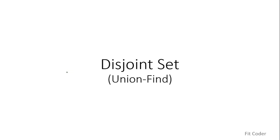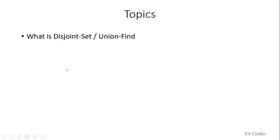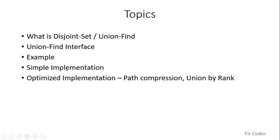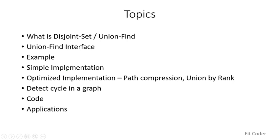In this video, I will be discussing disjoint sets, also known as union find or merge find. The topics we are going to discuss are: the definition of the disjoint set, the union find interface with an example, a simple but inefficient implementation, then optimizing it using two techniques — path compression and union by rank — followed by using disjoint set to detect a cycle in a graph. We'll code it in C++ and see the different applications.